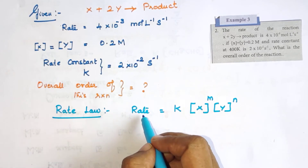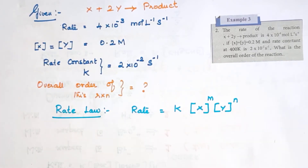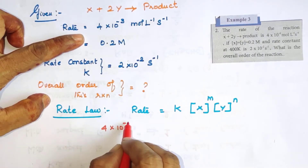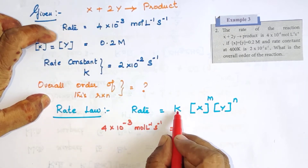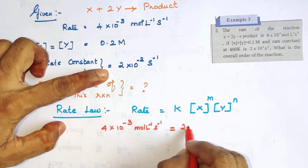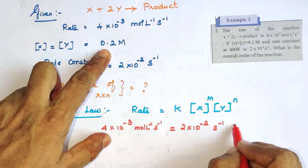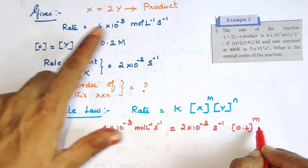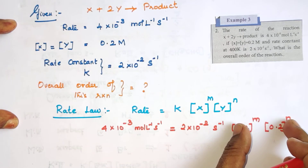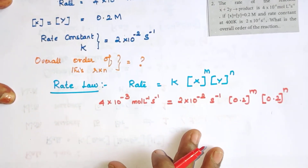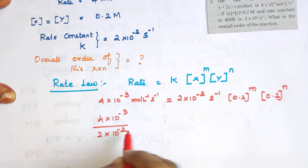In the equation, rate, rate constant, and concentration of the reactants are all related. So direct substitution: rate value is 4 into 10 power minus 3 mole per liter per second, this is equal to rate constant k which is 2 into 10 power minus 2 per second, into x concentration 0.2 power m, into y concentration 0.2 power n.